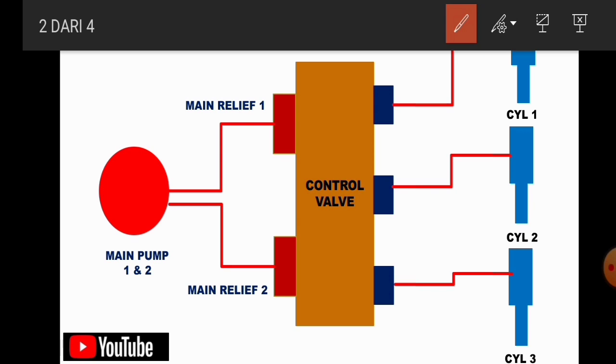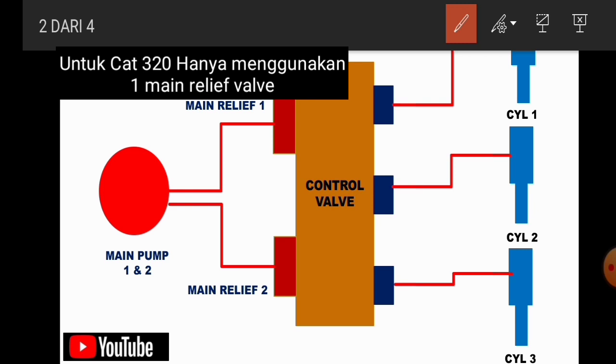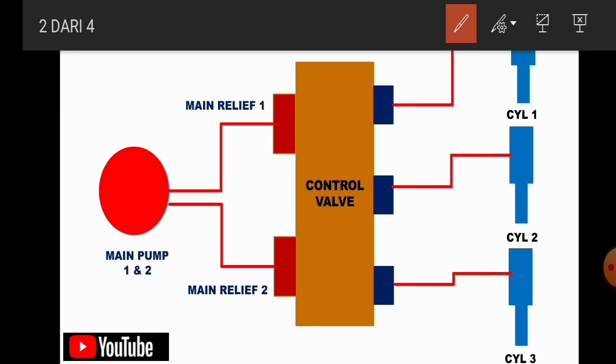Nah, untuk di eskavator kebanyakan menggunakan dua main relief palep karena rata-rata juga dia menggunakan dua output main pump. Ada main relief palep 1 dan ada main relief 2. Yang perlu kita ketahui bersama bahwa ketika melakukan adjustment usahakan lakukan pengejasan dua-duanya. Jangan hanya melakukan pengejasan salah satu saja karena pastinya ketika hanya dilakukan salah satu saja maka pressure yang akan nanti terbaca di sistem itu adalah selalu membaca pressure yang paling rendah. Itu yang perlu kita ketahui.